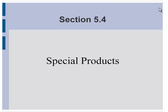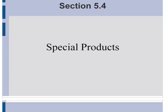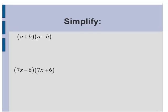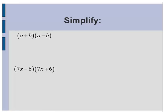Section 5.4, Special Products. In this section, we look at what happens sometimes when we multiply together certain polynomials.